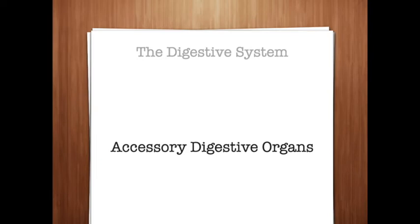The gallbladder is a pear-shaped sac located under the liver that stores and concentrates bile for later use. The term 'cholecystic' means pertaining to the gallbladder. When bile is needed, the gallbladder contracts, forcing bile out through the cystic duct and into the common bile duct, which carries it into the duodenum of the small intestine. The pancreas is a feather-shaped organ located posterior to, just behind, the stomach. It has important roles in both the digestive and endocrine systems. The pancreas synthesizes and secretes pancreatic juices made up of sodium bicarbonate to neutralize stomach acids and digestive enzymes to process protein, carbohydrates, and fats. These juices leave through pancreatic ducts that join the common bile duct just before entrance into the duodenum.